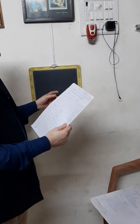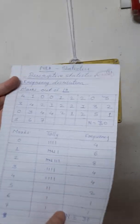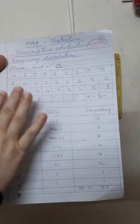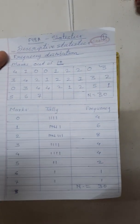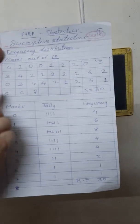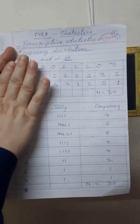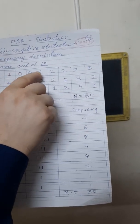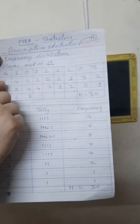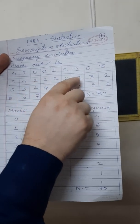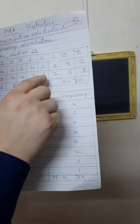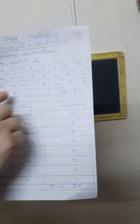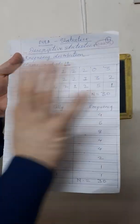Now there is one example — this is marks out of 10 of 30 students. So 30 students, see carefully, the marks are given out of 10. The data is: 4, 1, 0, 0, 1, 2, 2, 0, 3, 3, 4, 2, 1, 2, 2, 1, 3, 2, 0, 3, 4, 4, 2, 1, 2, 5, 1, 5, 6, 7. This is the data — total 30 students and these are their marks out of 10.